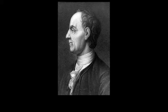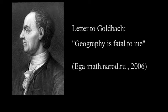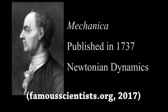Euler believed geography was responsible for his eyesight issues, as he strained his eyes mapping Russia. Around 1738, his eyesight began to deteriorate, and by 1740 he lost his sight in his right eye. Euler wrote to Christian Goldbach in 1740 to say, 'Geography is fatal to me.' His work in Russia also included a book on Newtonian dynamics, Mechanica, which was published in 1737.